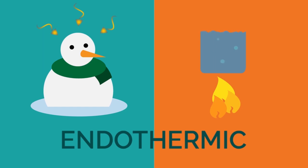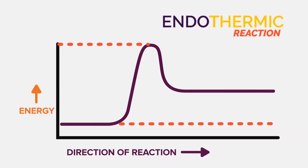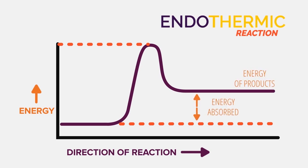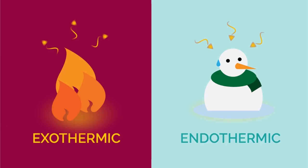Boiling is also endothermic because energy needs to be put in to break the bonds for the liquid to turn to gas. Because in endothermic reactions energy is added to the reaction, the energy of the products is higher than the energy of the reactants, and so the energy curve looks like this.